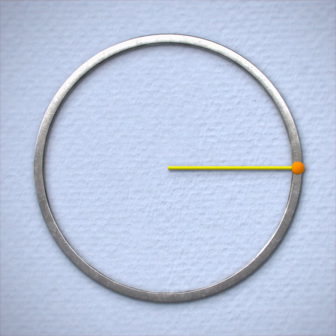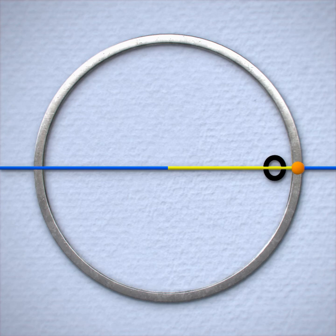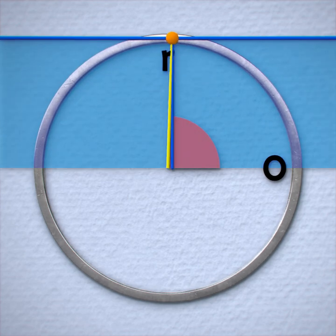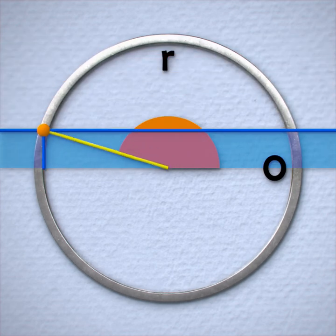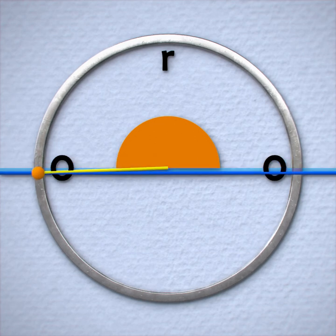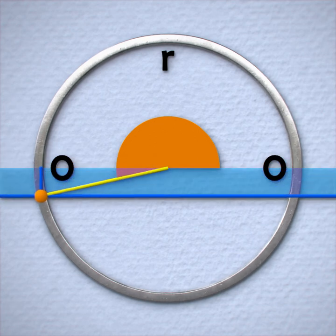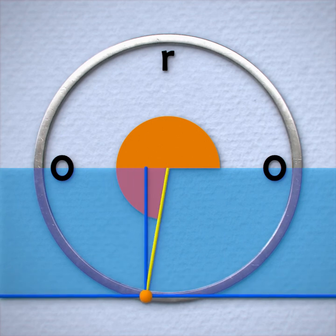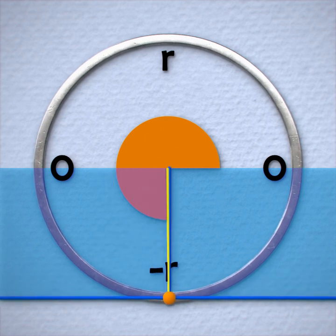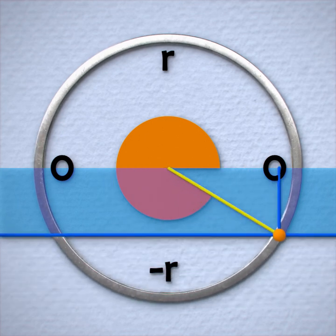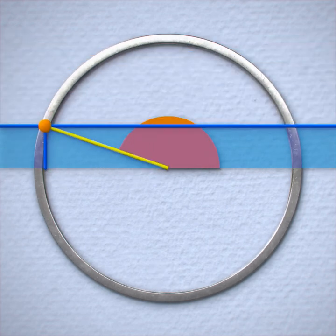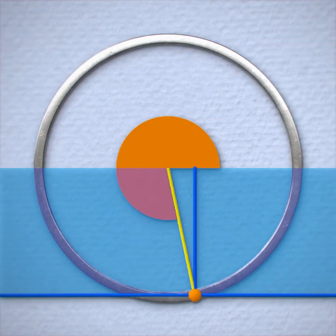If we only look at how the point is moving up and down, we see it starts at a height of zero, moves up to a maximum height of one radius, and then goes back down to zero. It then passes below the center point, which we could consider being a negative height. The lowest height will be one radius down before rising back up to zero. As we rotate the circle, the rate at which the point rises and falls doesn't remain the same.